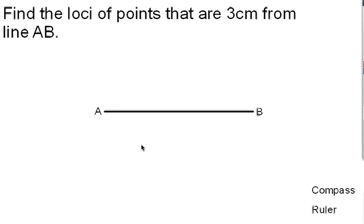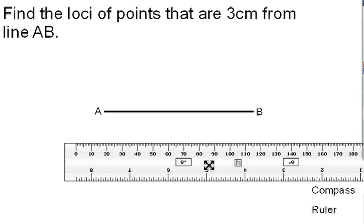This video is going to show us how to find the loci points that are 3cm away from line AB. To do this we're going to need a ruler and we're going to need our compass or our pair of compasses.